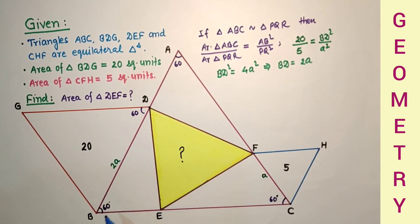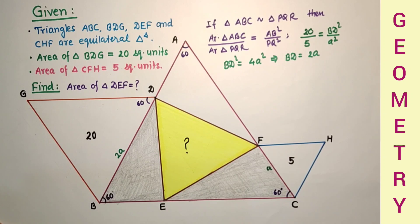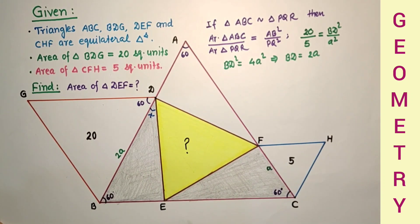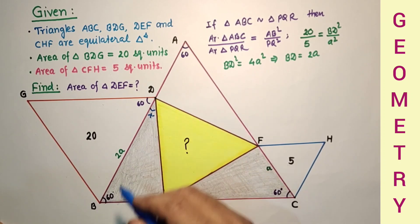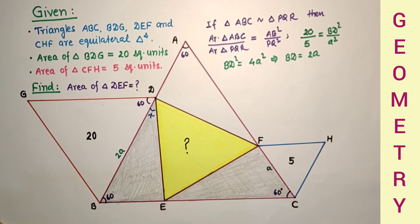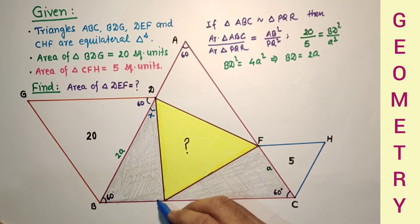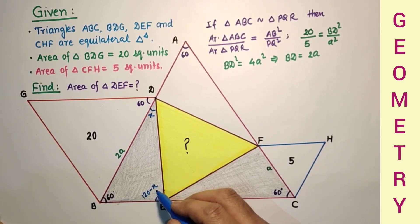Now I am considering triangles BDE and CEF and going to prove these 2 triangles are congruent. Let us suppose this angle is X. So this is 60 and this is X, so the third angle will be 180 minus (60 plus X), which is 120 minus X.